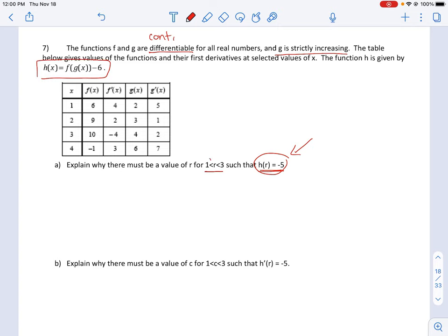Even if you're not sure about that, it gives you an interval to work with. So let's figure out the values of h at those values to start. I'm going to figure out what h(1) is using this definition. So h(1) is f(g(1)) minus 6. g(1) is 2, so this is f(2) minus 6. And f(2) is 9, so 9 minus 6 gives me 3. So h(1) is 3.